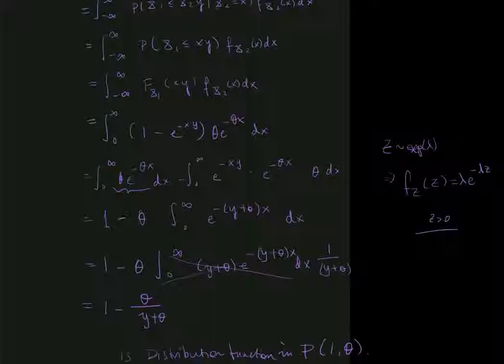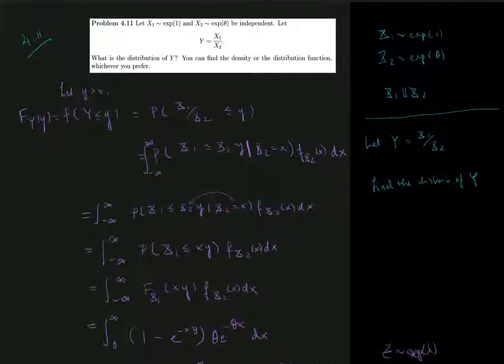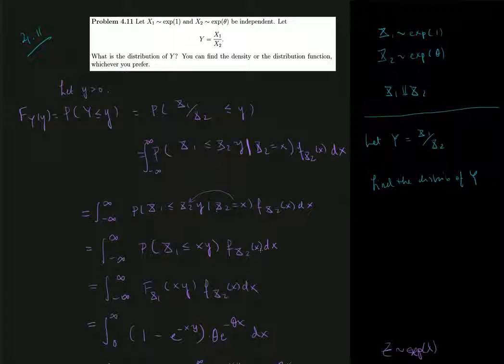So this exercise, while it is also an exercise in calculating stuff, it's also a good exercise to use to try to understand how convolutions actually work. Because what we do essentially is we work through the proof for showing the distribution of the sum of two independent stochastic variables. Except in this exercise, we show the distribution of the ratio of two independent stochastic variables instead.